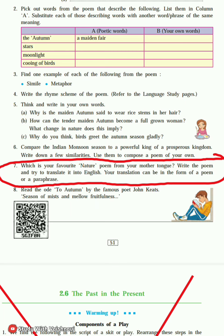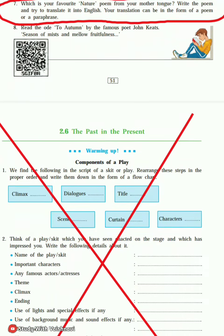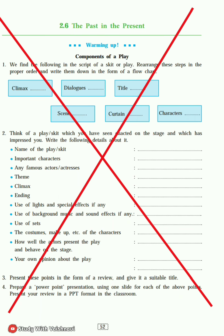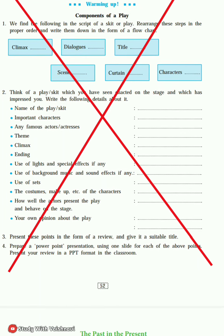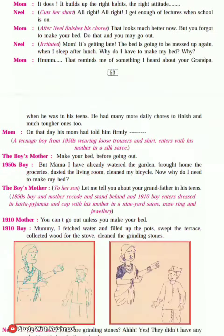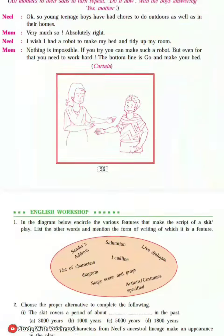2.5 - 'Autumn', that poem - page number 51, question number 7 was fully reduced from the syllabus; only question number 7 was reduced. After that, 2.6 - 'The Past in the Present', page number 52 - that warming up was fully reduced.